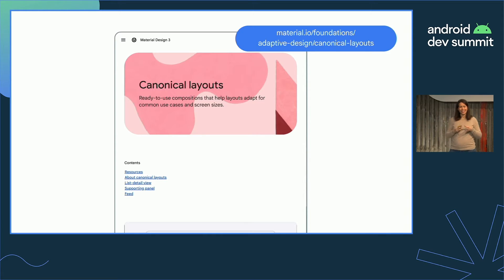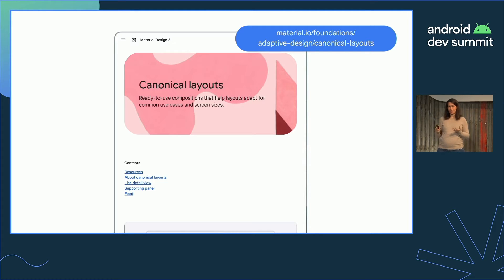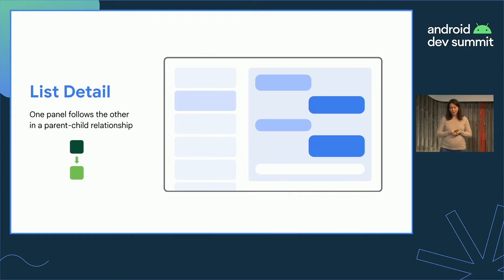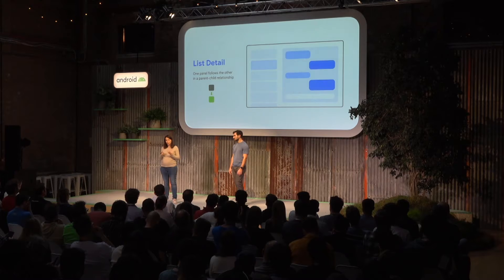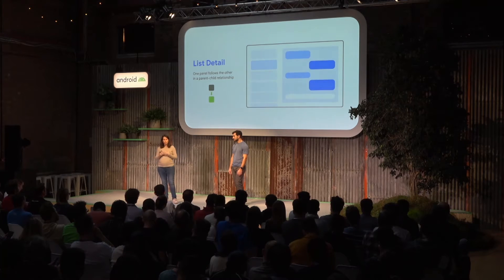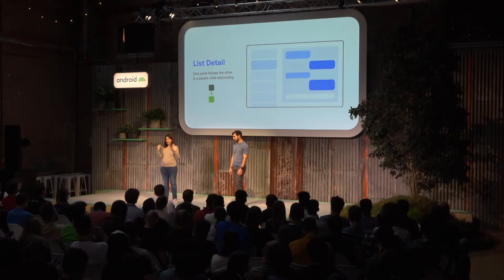One area I really want to point out is canonical layouts — an exercise of looking at apps that support large screens in the wild and distilling them into typical app structures we can recommend. For example, if you have content in a parent-child relationship like a list of emails and an open email, that's described by a list-detail layout, where when there's enough space you place them side by side. When there's less space, you probably only show the detail.